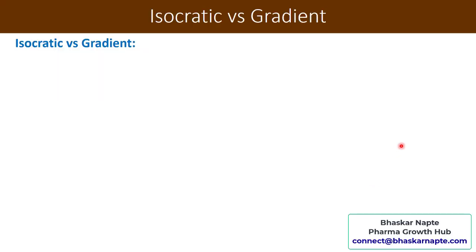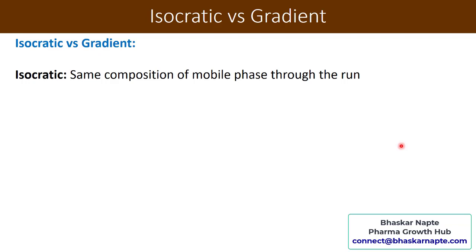Before we move on to the reason behind ghost peaks and baseline drift, let us first understand what is meant by isocratic mode and gradient mode. Isocratic mode is when the same composition of mobile phase is used throughout the entire run. For example, if your run time is 10 minutes for a paracetamol assay and the composition remains 90% water and 10% methanol, you are using HPLC in isocratic mode.